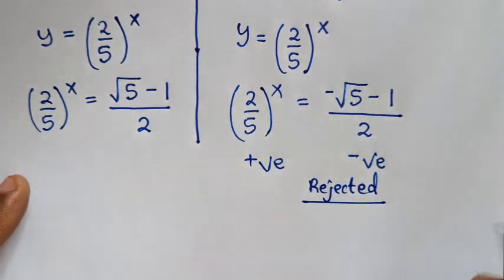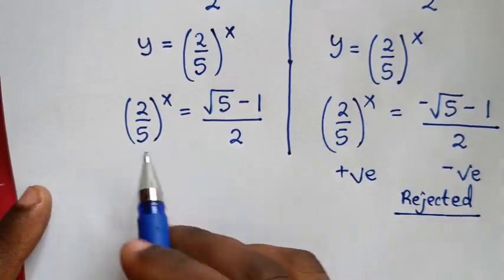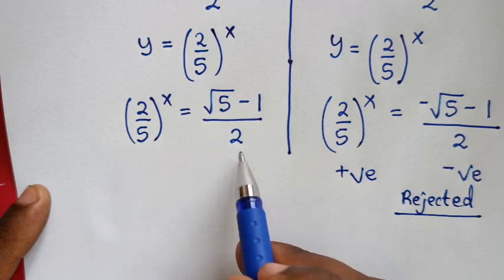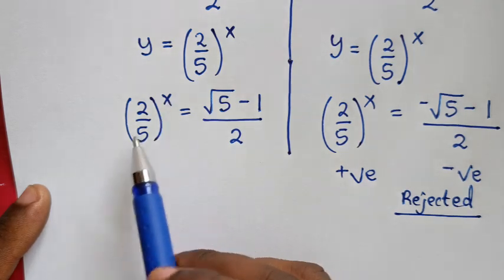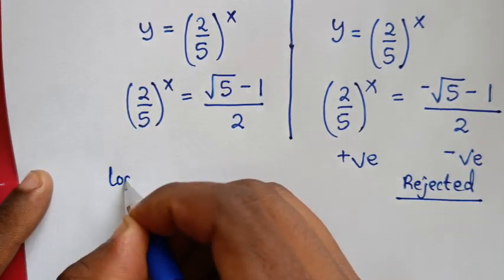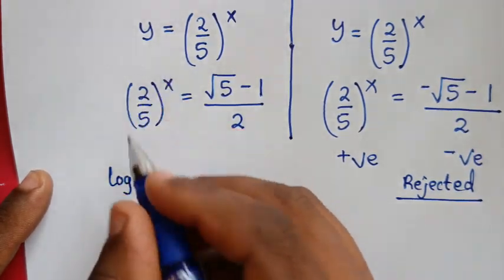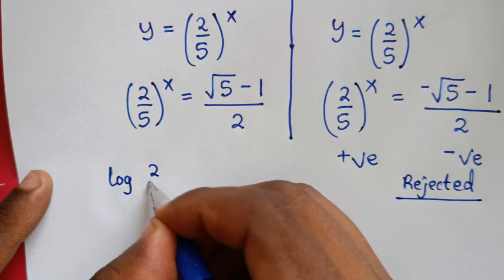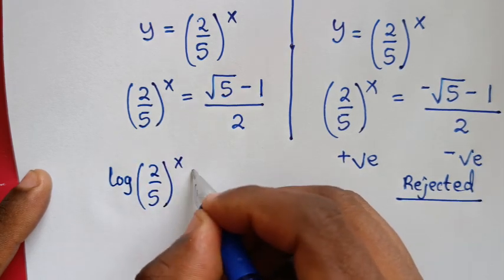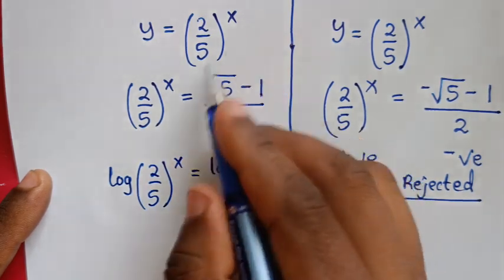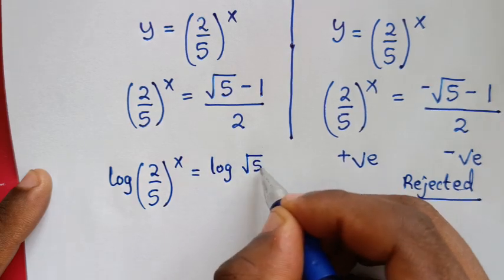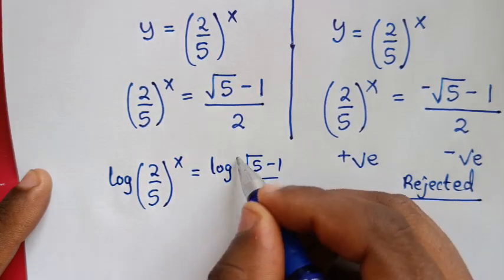We continue with the first solution. To find x, we apply log to both sides: log((2/5)^x) = log((√5 − 1)/2).